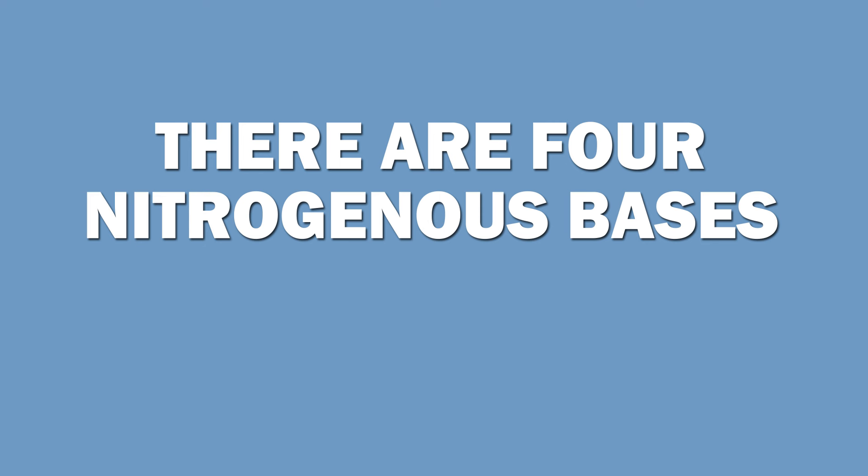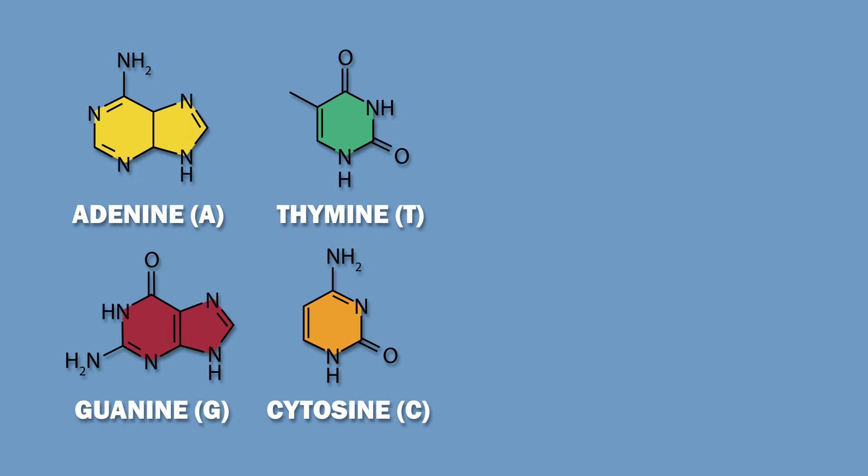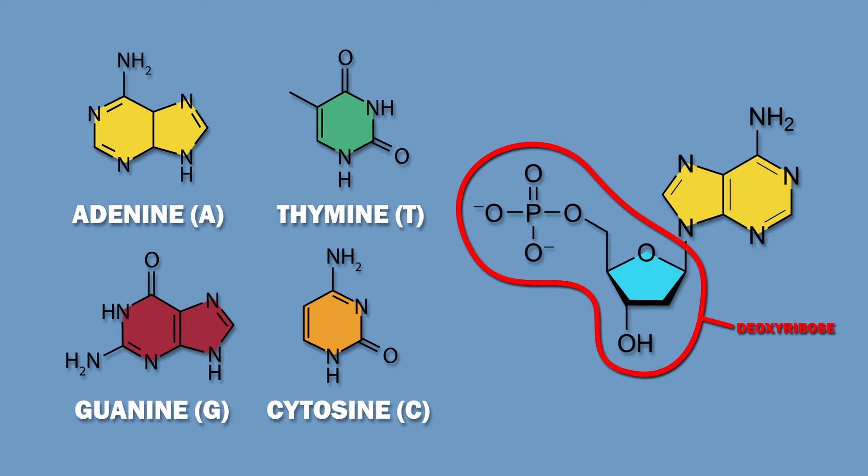There are four nitrogenous bases: adenine A, guanine G, thymine T, and cytosine C. Each of these attaches to deoxyribose via a glycosidic bond.